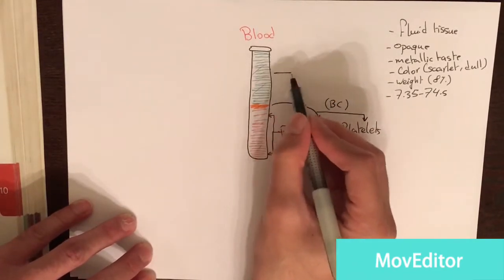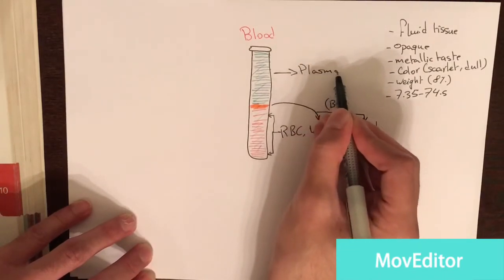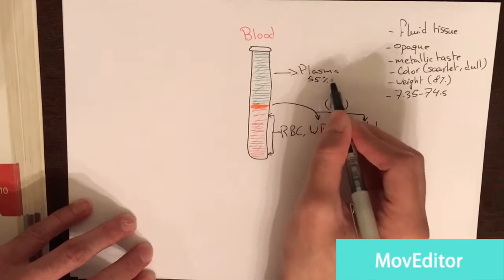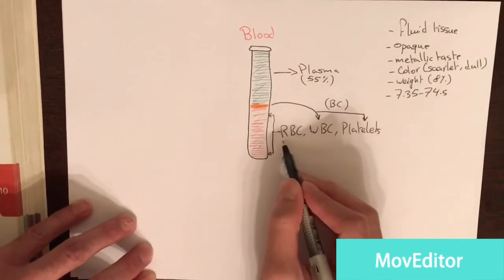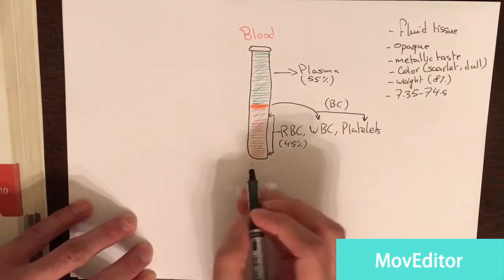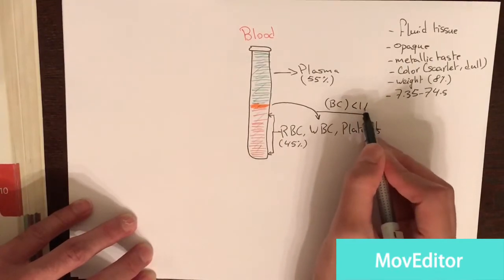Please note that the plasma accounts for 55% of the blood, and the red blood cell or the hematocrit accounts for 45% of the blood, and the buffy coat accounts for less than 1% of the blood.